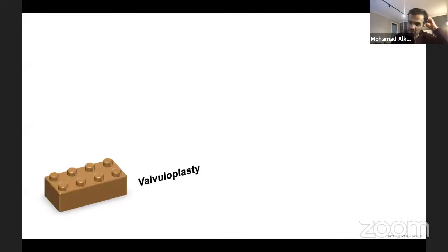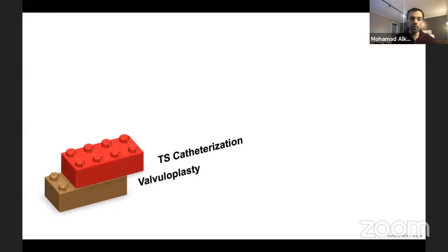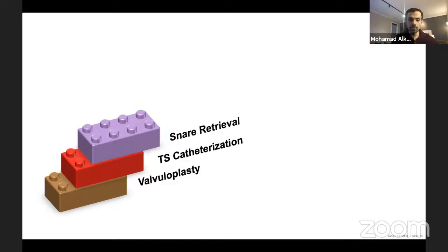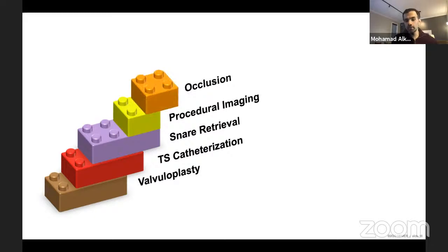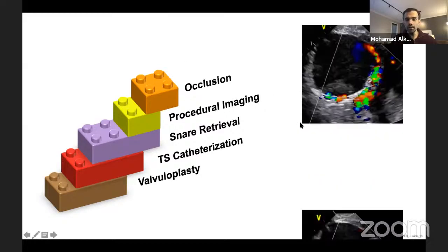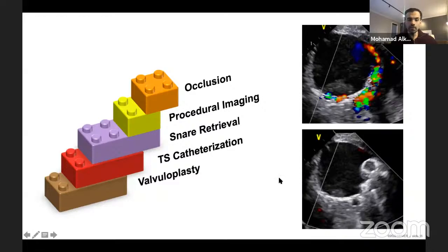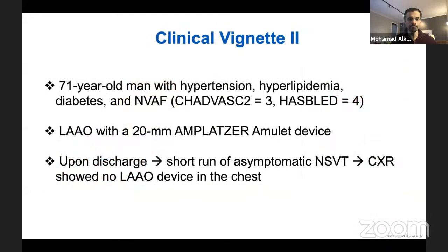Let's break this down. We tried our valvuloplasty skill initially — that didn't work. We then used the transseptal puncture skill, the snare retrieval skill, procedural imaging skills, and occlusion skills. People might think paravalvular leak means just occlusion skills, but really it's all of those things together that allowed us to tackle this wide jet in a minimally invasive fashion. That's what I mean by breaking the procedure into building blocks of skills.